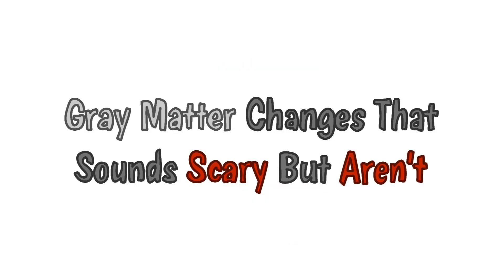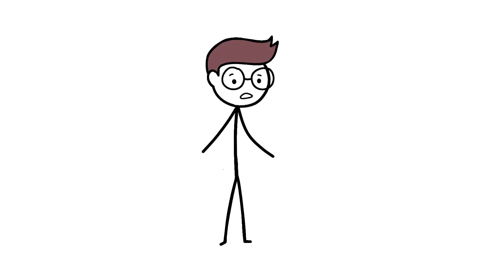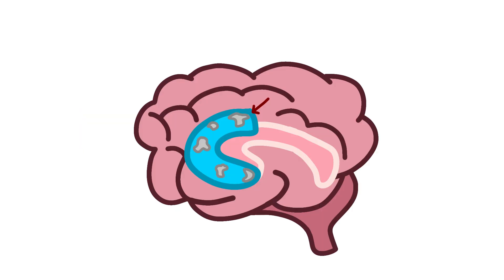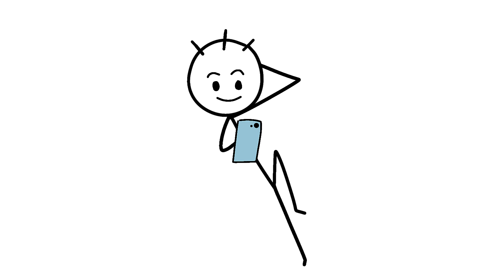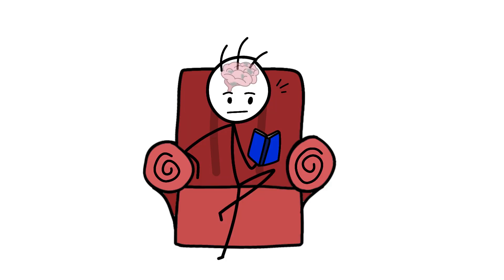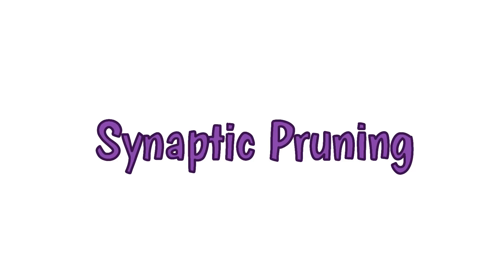Gray matter changes that sound scary but aren't. Smartphones shrink gray matter. Yes, technically true. A 2017 study from Korea University found reduced gray matter volume in the anterior cingulate cortex of smartphone-dependent teenagers. Sounds terrifying until you realize that learning to read also reduces gray matter in certain regions. So does learning to juggle, or play violin, or literally any skill acquisition. This is synaptic pruning, not brain damage.